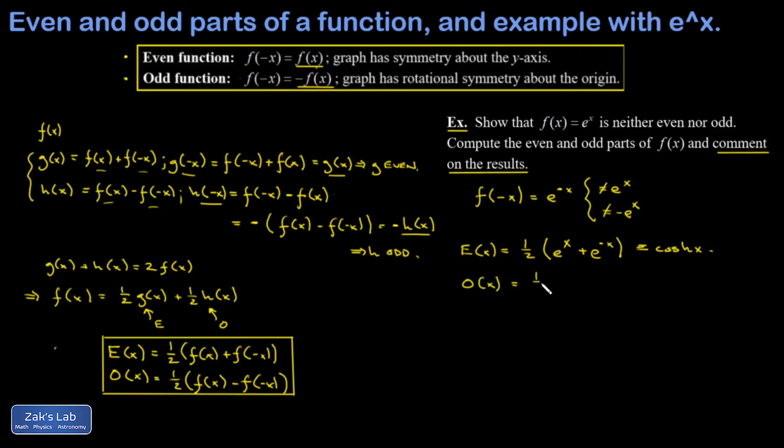Now you might suspect what's going to happen next. The odd part of e to the x according to the formula: I take e to the x, e to the negative x, subtract them. That's the hyperbolic sine function.